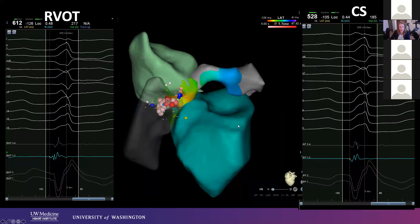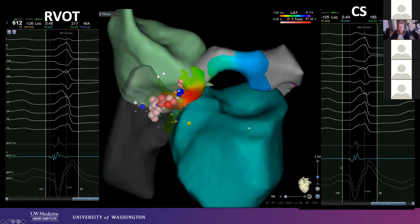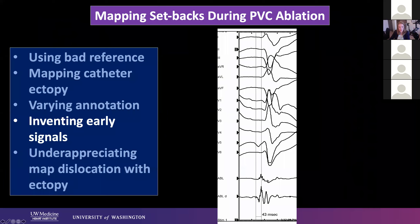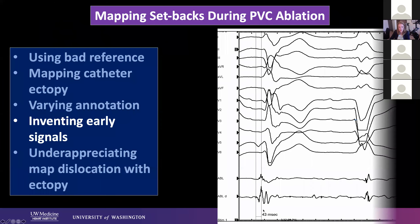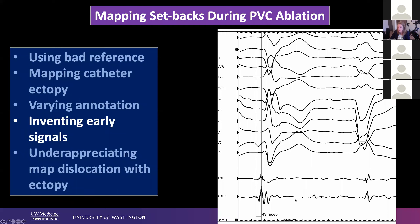Here's an example where we were in the RVOT, and with one particular annotation it looked like we were pretty early there, whereas in the coronary sinus we looked late. But the coronary sinus was being annotated a little bit later. If we moved that coronary sinus annotation forward, now the CS was the place to be — and pace maps had looked good at both sites. Inventing early signals: here's an example on a papillary muscle where I thought I had a fascicular potential before the QRS. But looking at the whole strip, that potential wasn't there with every PVC beat. We all have noisy labs, and those mechanical events — through chordae, through the aortic valve — can create pseudo-electrical signals.